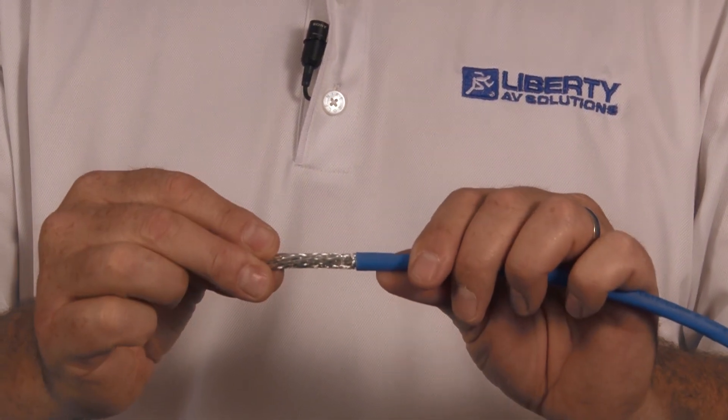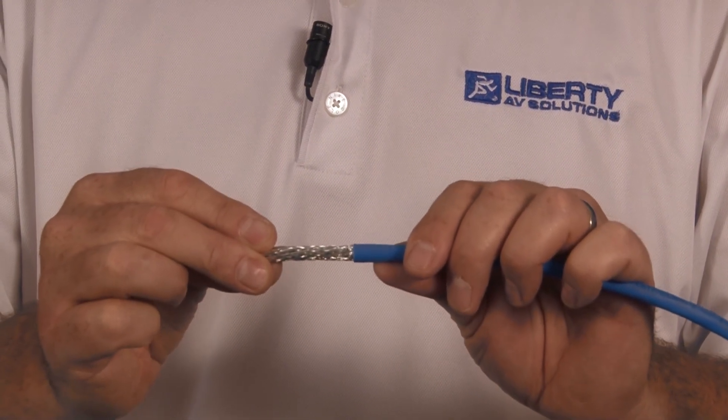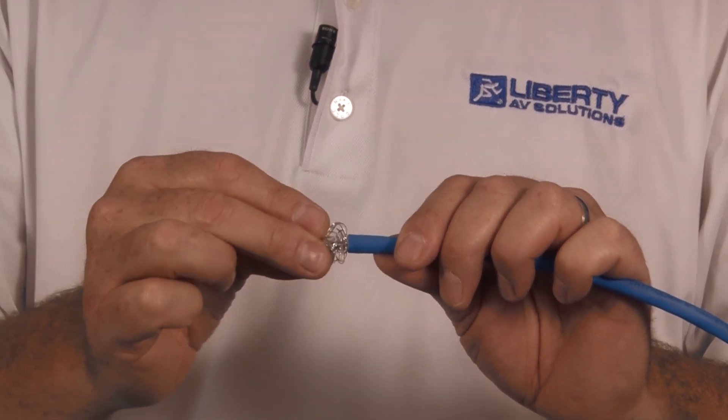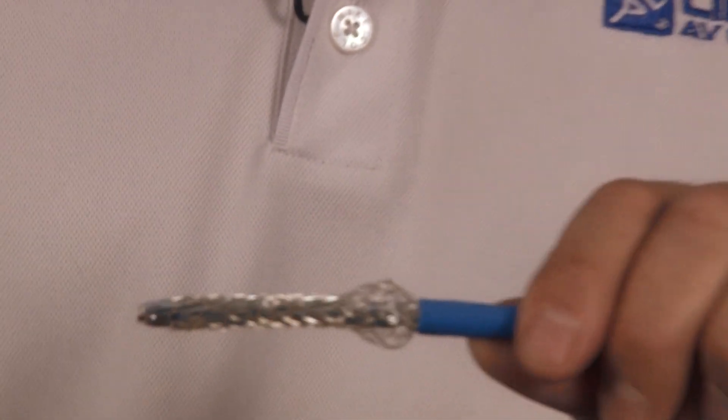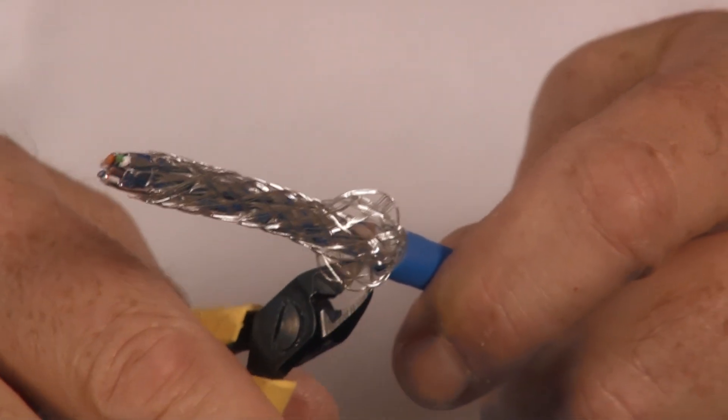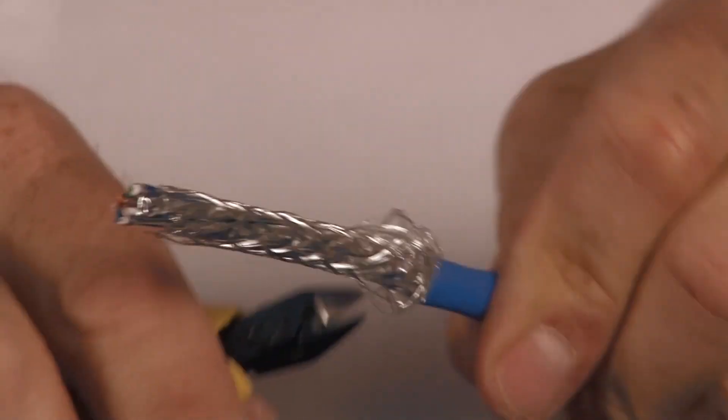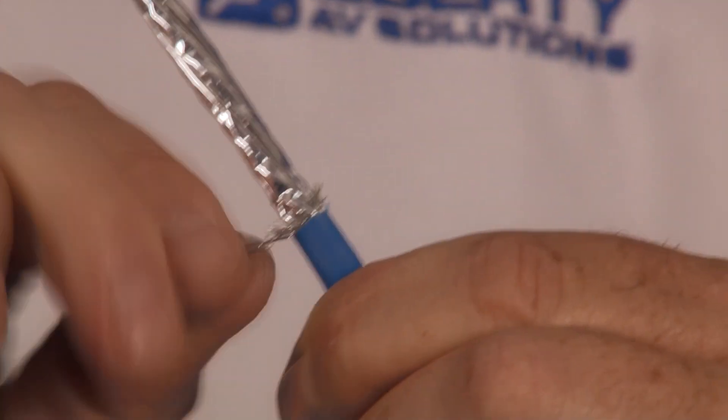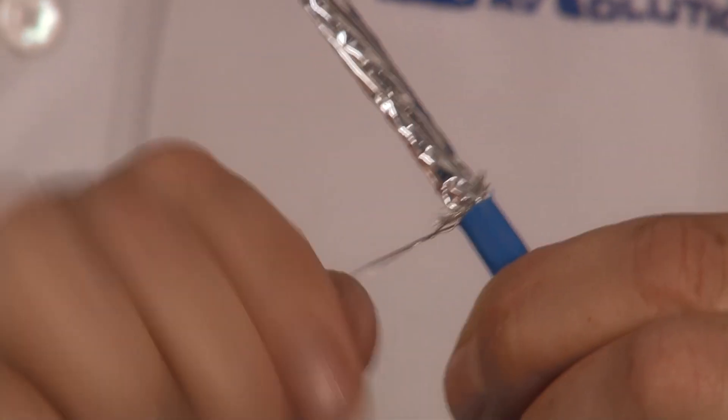First thing I want to do is remove the braid shield and I don't want to remove it all because I want to keep a couple strands to use as a drain contact. So I push on it to birdcage it and then I'll use a pair of diagonal cutters and trim off the braid. I kind of form that into a little pigtail, give it a little twist, fold it back against the jacket.